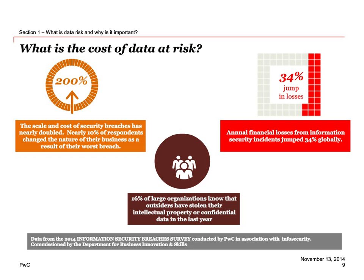Now Pete will talk a little more about risk. PwC did a survey on information security breaches, and what we found was very interesting. Over the last few years, we've seen the cost and scale of these types of breaches double — each breach is now costing twice as much as it used to. There's also a bigger impact on financial losses from the average breach. So it's a big risk from a cost perspective, and there's a lot of different things it can impact.